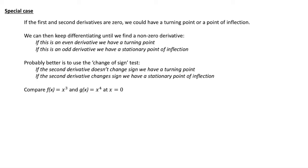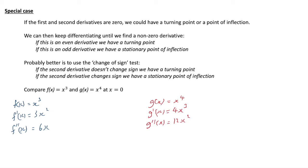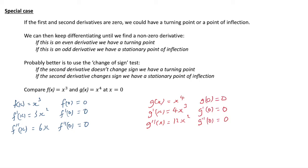Let's look at f(x) = x³ and g(x) = x⁴ at x = 0. First, the derivatives: f'(x) = 3x², f''(x) = 6x; and for x⁴, g'(x) = 4x³, g''(x) = 12x². Substituting x = 0, we find f(0), f'(0), and f''(0) are all zero, and the same for g, g', and g''. At that point, we can't distinguish between them.